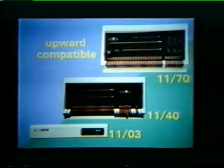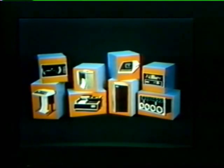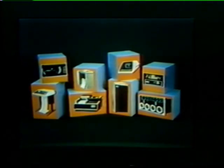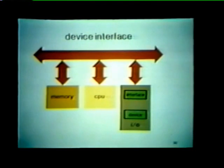Each of these PDP-11 processors is supported by several types of memories and by a wide selection of input-output devices. Some of the more common input-output devices include teleprinters, paper tape readers and punches, card readers, line printers, and graphic displays. In addition, there are mass storage devices such as disks and magnetic tape units. These devices cannot be connected directly to the PDP-11 unibus — each device requires an interface. This interface connects to the unibus and handles all communications between the device and the other elements in the system.